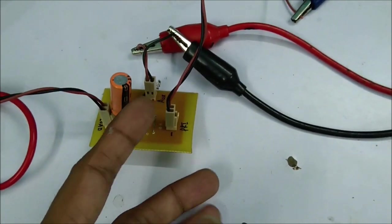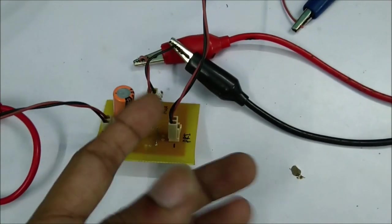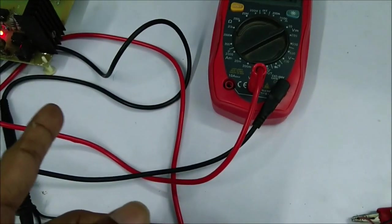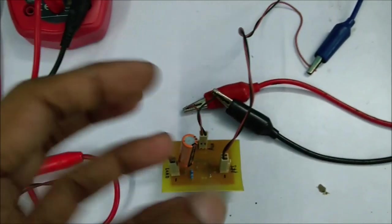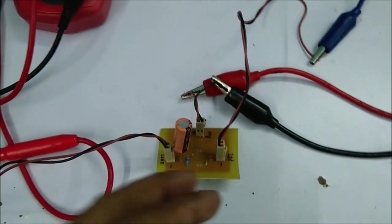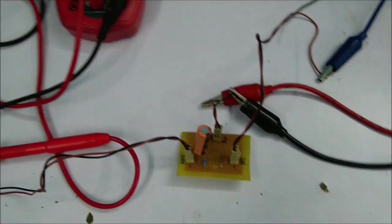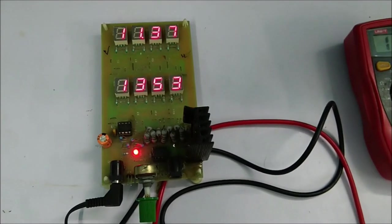Whenever the power fails, it will automatically switch to the battery without disconnecting the load. The load will not be affected during shutdown and power regain time. We will test it. Here is the setup with a resistive load.